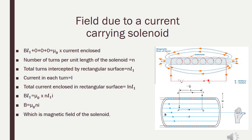Per unit length there are N number of turns, so within length L₁ the total number of turns is N × L₁. The total current enclosed by the Amperian path is I × NL₁, where I is the current through each turn. Substituting into the equation: BL₁ = μ₀ × NL₁ × I. Cancelling L₁ from both sides: B = μ₀NI, which is the required magnetic field strength of the solenoid.